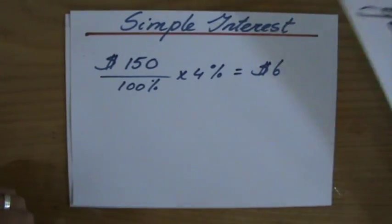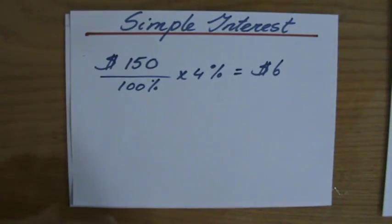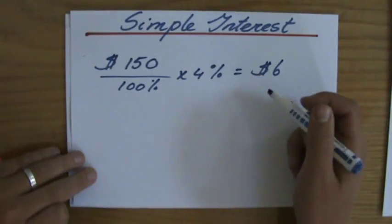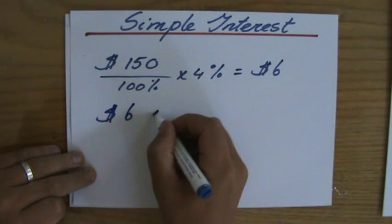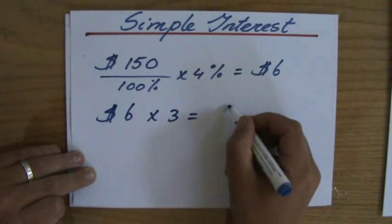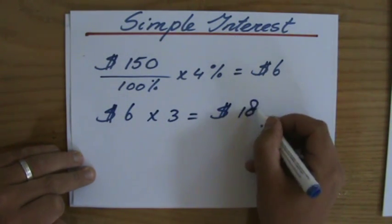So what do I have to do with that $6? Well, that's for one year, so I multiply by 3 to find the amount I'll get in three years. That's $18.